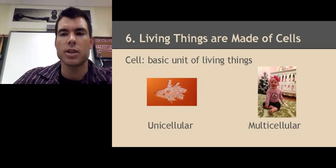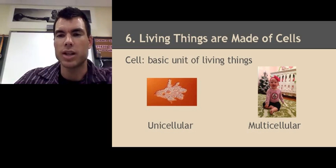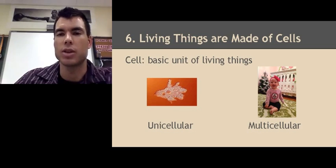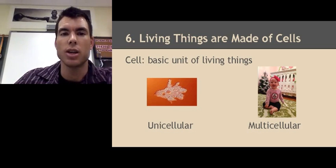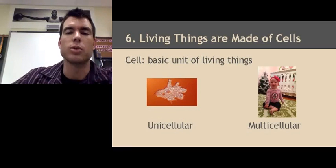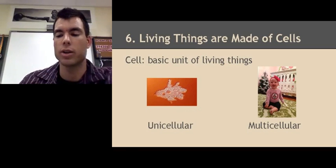Living things are made of cells, as discussed in the cell theory — they must be made of one or more cells. If it's made of one cell, it's called a unicellular organism; an amoeba is an example. If you're made of more than one cell, you're multicellular. My daughter is an example — she is composed of many, many cells, each with its own specific function. Going back to using energy, you have cells specific for moving, for breathing, for processing your food. Cells are the most basic part of a living thing.